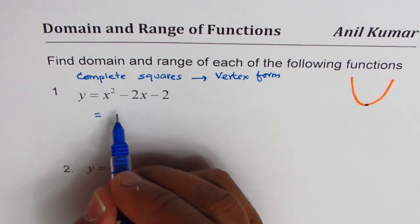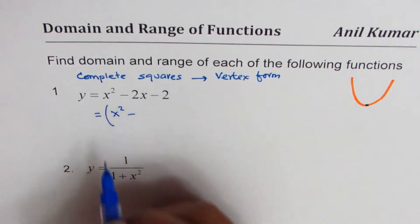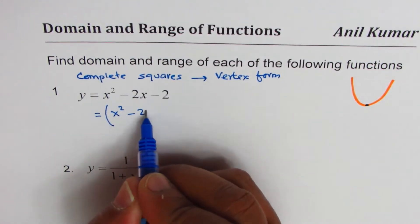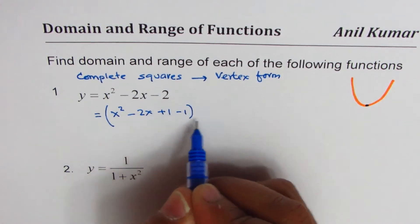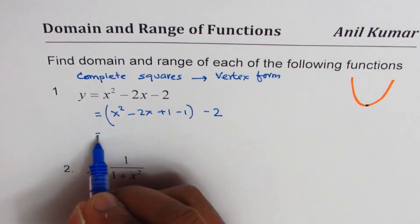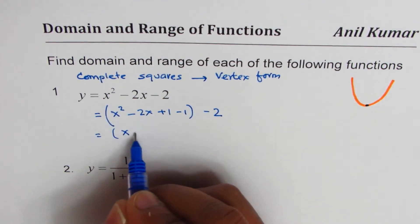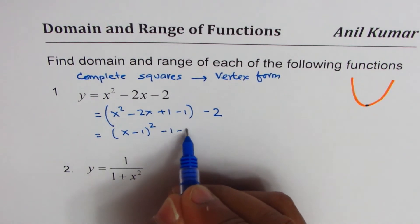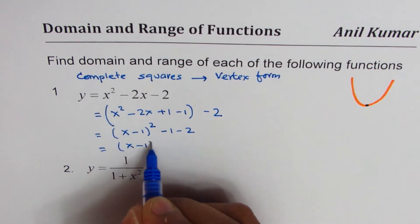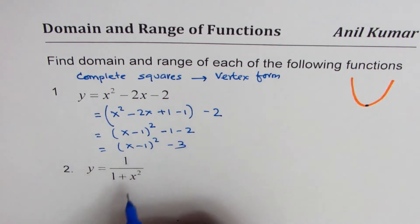So it is x squared minus, let's put this in brackets, 2x. Half of 2 is 1, so we'll add and subtract 1 squared minus 2. So that gives us x minus 1 whole square. These three terms give us that. Then we have minus 1 minus 2, and that is x minus 1 whole square minus 3. So whenever you are given quadratic equation in standard form, you should complete squares and find the vertex. That's a good idea.